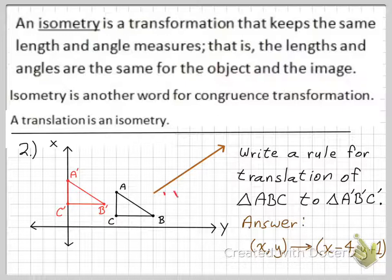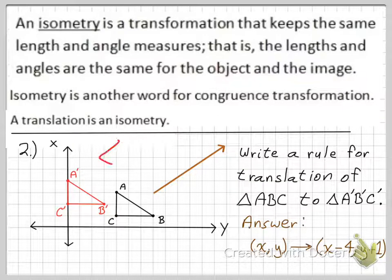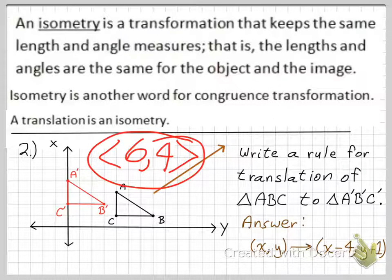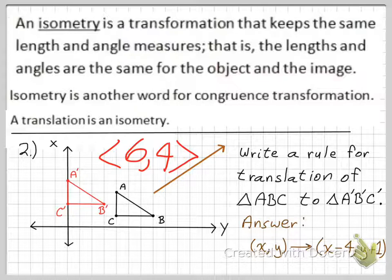Going from the start to end, I go 1, 2, 3, 4, 5, 6 to the right, and then 1, 2, 3, 4 up. So it was 6 to the right and 4 up. In vector form, this vector is denoted as ⟨6, 4⟩ using these angle bracket symbols. Whenever you see this shape, it means we're talking about vectors. Don't let the word vector disturb you — it's basically just an arrow, and its component form shows its direction and size.